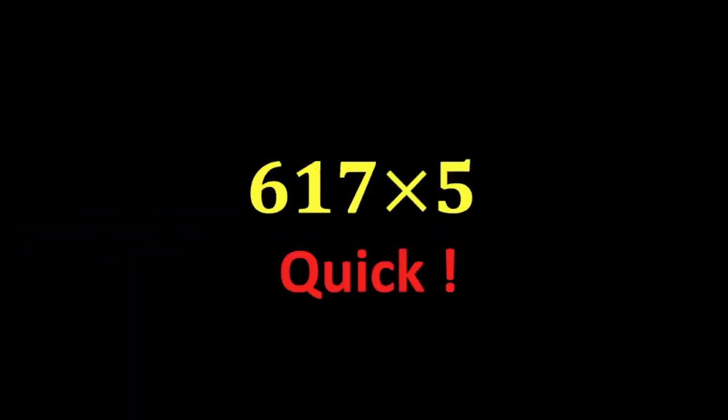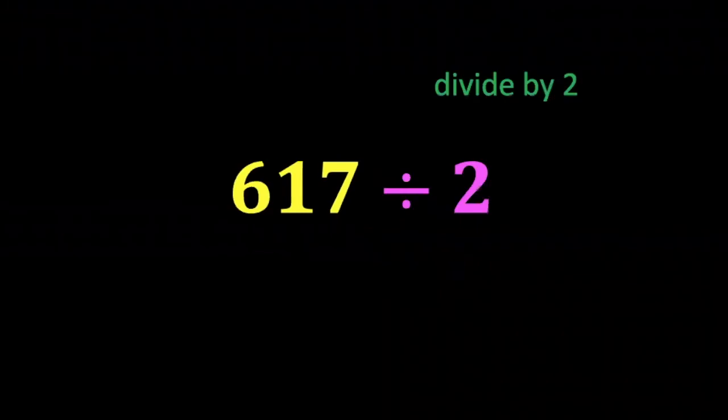Okay, let's try this for something more complicated. We have 617 times 5. This time I'm going to divide by 2 first, although you could multiply by 10 if you prefer to do that first.